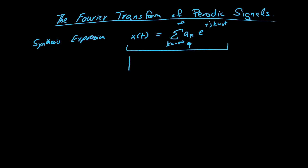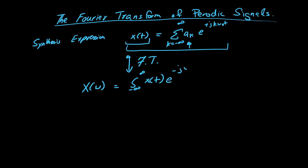We are interested in taking the Fourier transform of this signal, that is X(ω). So we have an integration from minus infinity to infinity of x(t) times e^(−jωt) dt.